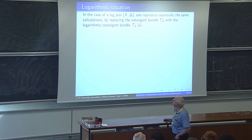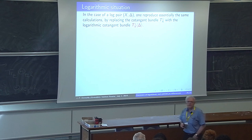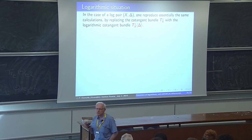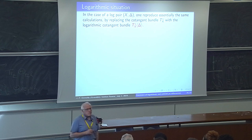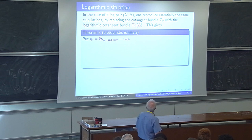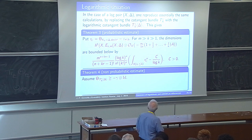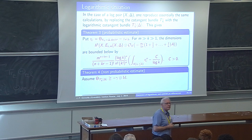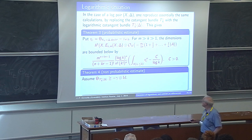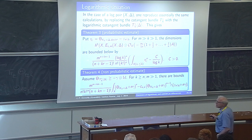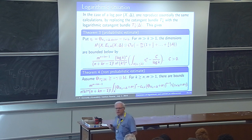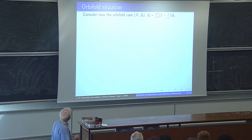In the logarithmic situation essentially nothing changes: apply the same technique replacing the cotangent bundle by the logarithmic cotangent bundle, and the canonical bundle by K_X + Δ. Both the probabilistic and non-probabilistic estimates go through with this substitution. Now I come to the orbifold case.